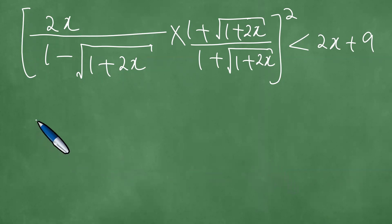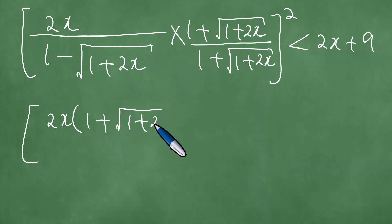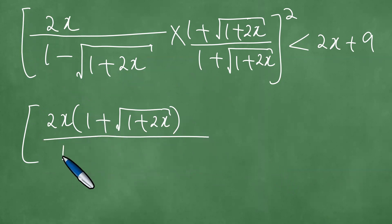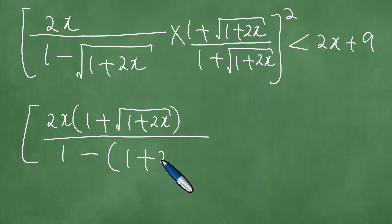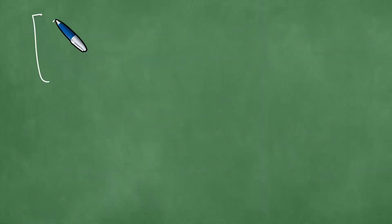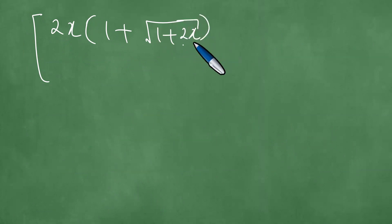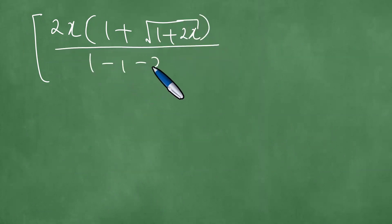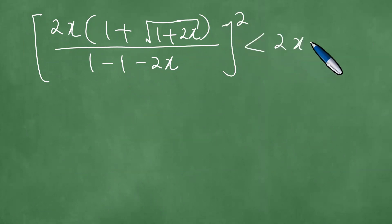At this point, we have 2x into 1 plus the square root of 1 plus 2x in the numerator. The denominator has 1 times 1, which is 1, minus the square root of 1 plus 2x times the square root of 1 plus 2x, which is 1 plus 2x. This expression is squared, and is less than 2x plus 9. In the denominator, we apply distribution, getting 1 minus 1 minus 2x.